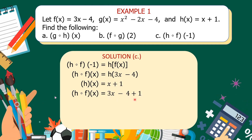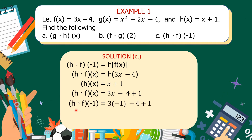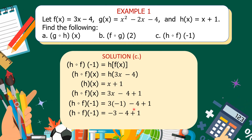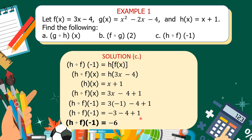Now since we've applied the definition of the composite function, we can substitute negative 1. So h circle f of negative 1 equals: replace x with negative 1, so 3 times negative 1, bring down minus 4 plus 1. So we have 3 times negative 1 minus 4 plus 1. Simplifying: 3 times negative 1 is negative 3, then negative 3 minus 4 is negative 7, plus 1 is negative 6. So h circle f of negative 1 is equal to negative 6.